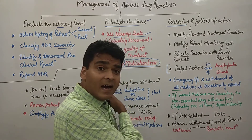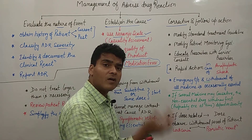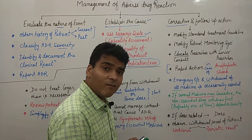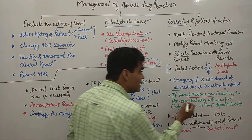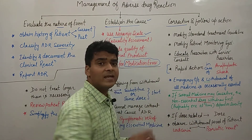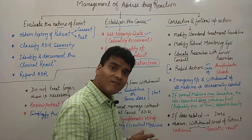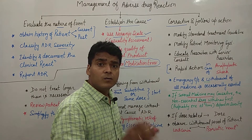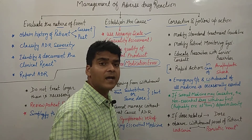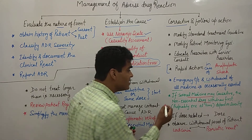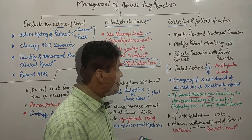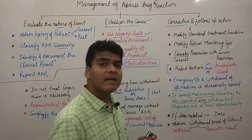If the patient is on several medicines and causality assessment reveals that the adverse drug reaction is due to two or three drugs, then the drug that caused the most damage should be removed first. Non-essential drugs should be removed before essential ones.